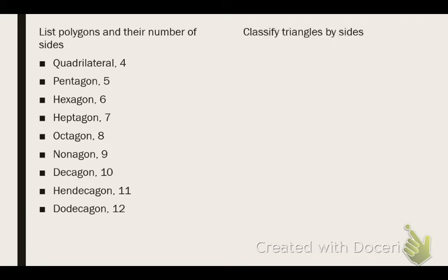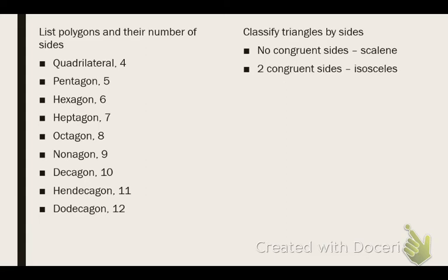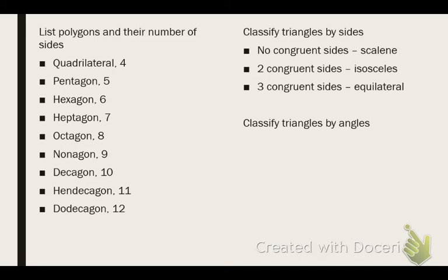Listing or classifying triangles by their sides: if there are no congruent sides, that's called scalene. A triangle with two congruent sides is called isosceles. A triangle with three congruent sides is equilateral. To classify by angles, the options are acute, right, obtuse, and equiangular. These are two points apiece.